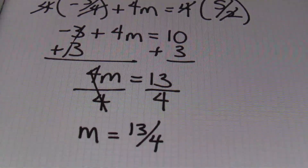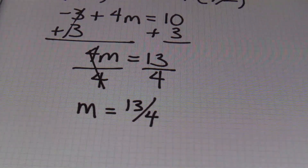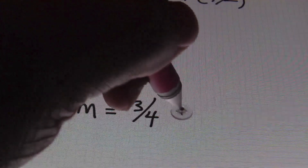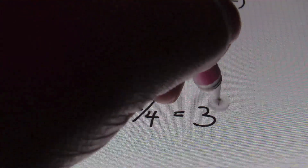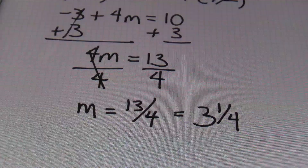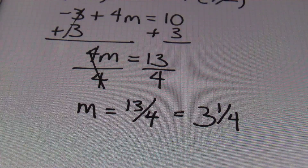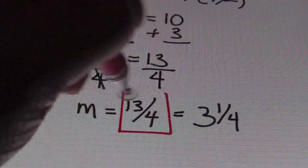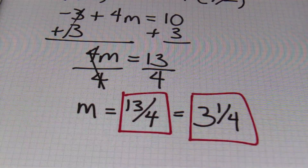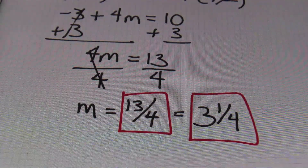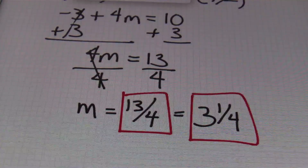As I stated before, 13-fourths is an answer you can submit. Or if you need to change this into a mixed number, four goes into 13 three times and leaves you with a remainder of one over the denominator of four. Either one of these answers is correct — you can submit your answer as 13-fourths or three and one-fourth. Either would be correct, and that's problem number three.